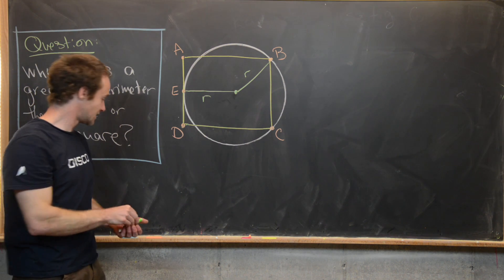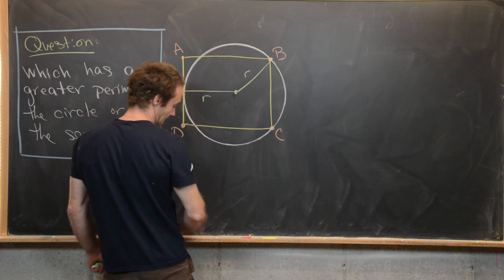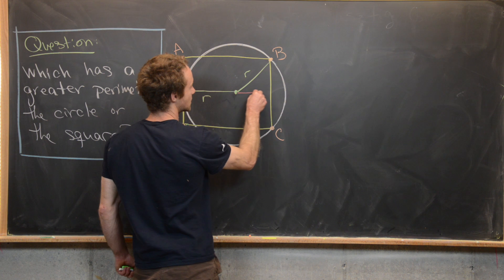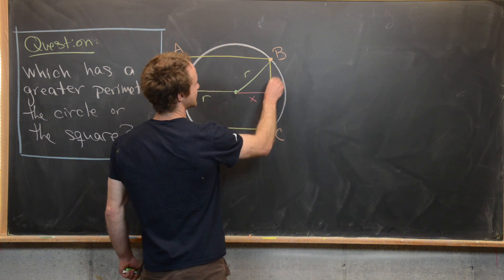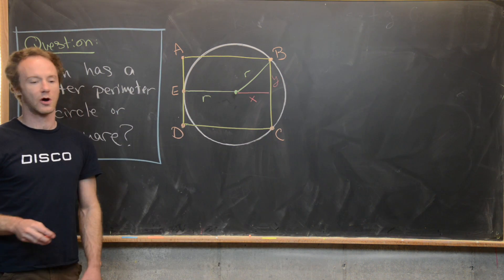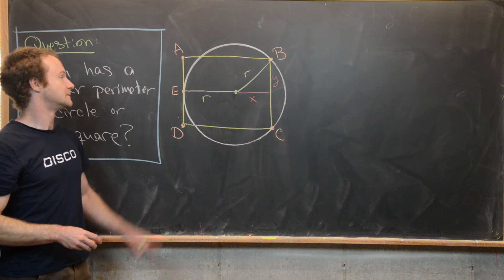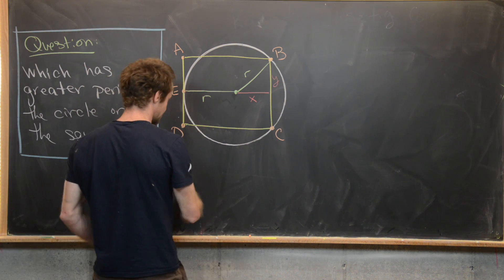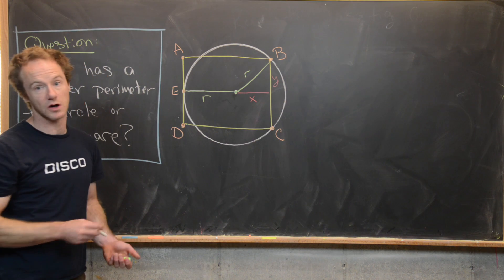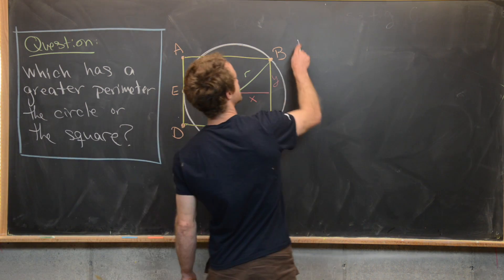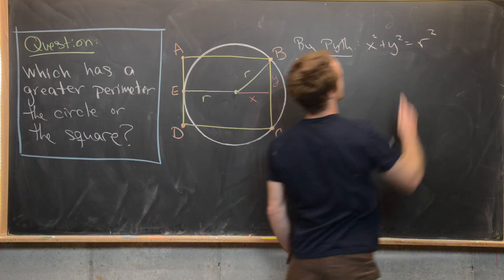But then next, we can notice that this length right here, which we could call X, and this length right here, which we could call Y. And then furthermore, we know some stuff. We know that X squared plus Y squared equals R squared by the Pythagorean theorem.